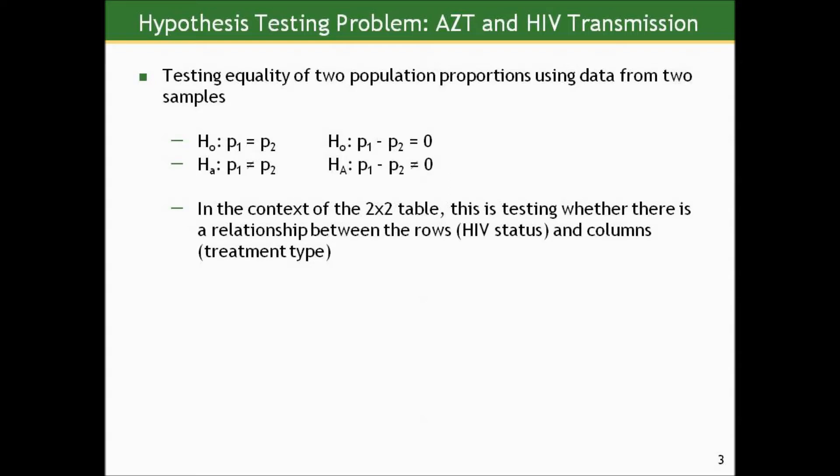Fisher's Exact Test, on the other hand, is always appropriate to test the equality of two proportions. But the calculations are difficult, and they're computationally intensive, with the degree of intensity increasing with sample sizes. So they didn't used to be able to be performed by computers, except in the smallest situations. They give exact p-values, there's no central limit theorem-based approximation, and there's no minimum sample size requirements.